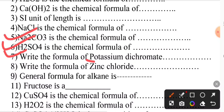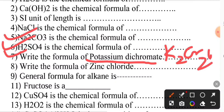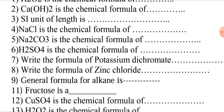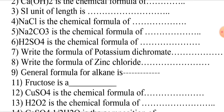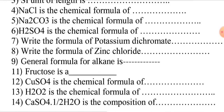Potassium dichromate formula: potassium dichromate is K2Cr2O7. The next question is the formula of zinc chloride. Zinc chloride has the formula ZnCl2.